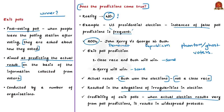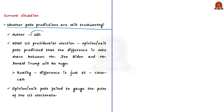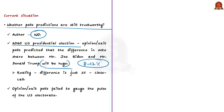The situation has since changed and many experts question whether poll predictions are still trustworthy. According to the author, the answer is no. Take the recent 2020 US presidential election: exit polls and opinion polls predicted a difference in vote share between Joseph Biden and Donald Trump of 8 to 12 percent, but the reality was a difference of just about 3 percent — a very close contest. This means opinion and exit polls failed to gauge the pulse of the US electorate.